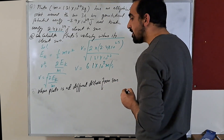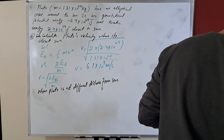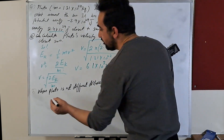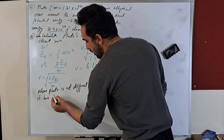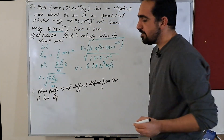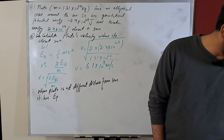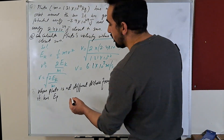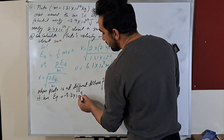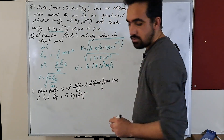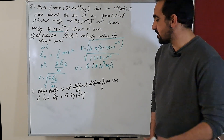At a different distance from the Sun, Pluto has a gravitational potential energy E-p equal to minus 3.2 × 10²⁹ joules. The question asks: what is its kinetic energy at this point?